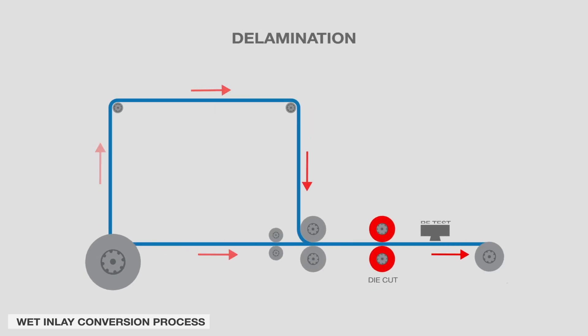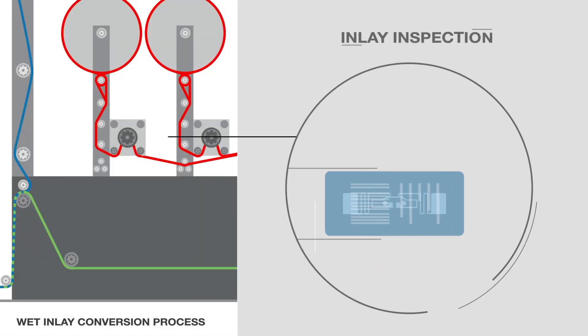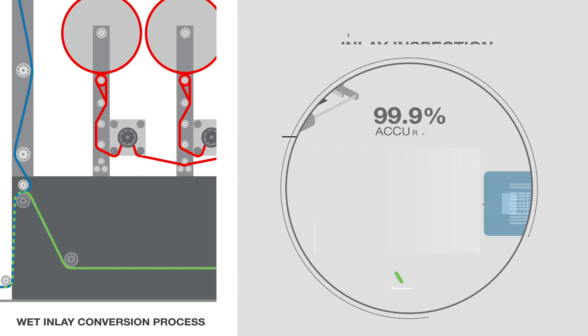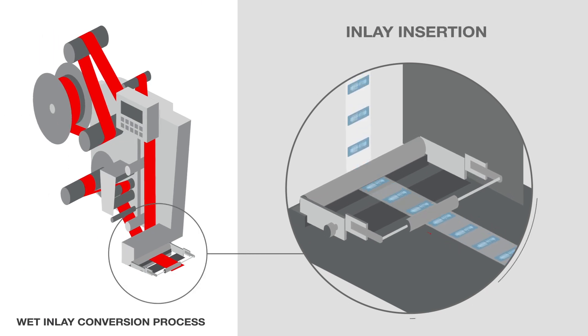First, the self-adhesive stock is delaminated by separating the liner and the face stock. Each inlay is read and verified individually before insertion. This is often optional, depending on the capability of the insertion module. The individual inlays are then dispensed into the release liner to match the final product pitch.